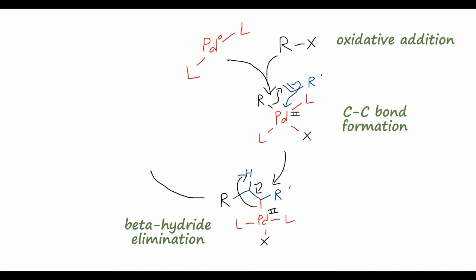So from this step, we get our desired product, the cross-coupled R and R' compound. However, we're still not done with the catalytic cycle, so we end up with this palladium intermediate here, where we have again still the two ligands on the palladium, we still have the halide, and now remember we've just taken off that hydrogen, so we're going to have a hydrogen on the palladium as well.